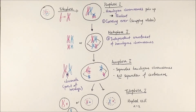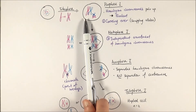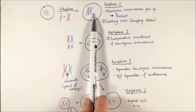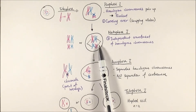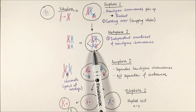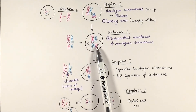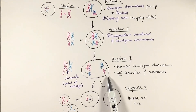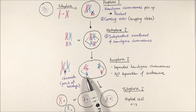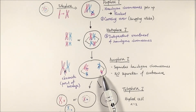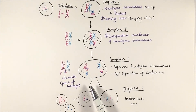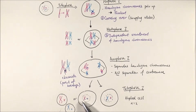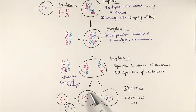Here's the overview of meiosis one. In prophase one, homologous chromosomes pair up forming bivalents, and crossing over occurs — the swapping of alleles between homologous chromosomes. In metaphase one, the bivalent pairs line up along the equator and spindle fibers attach to the centromeres; we have independent assortment of the homologous chromosomes, meaning a random arrangement on either side of the cell. In anaphase one, homologous pairs separate and are pulled to either end — with no splitting of the centromere. In telophase one, the nuclear envelope reforms, the DNA relaxes, and we get haploid cells. Both cells then go into meiosis two.